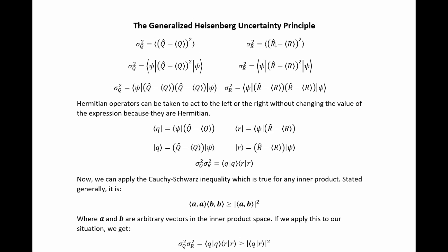So we have these two relationships here, which gives the square of the uncertainties of arbitrary observables. I haven't specified what Q and R are specifically because we want it to be a generalized uncertainty principle.